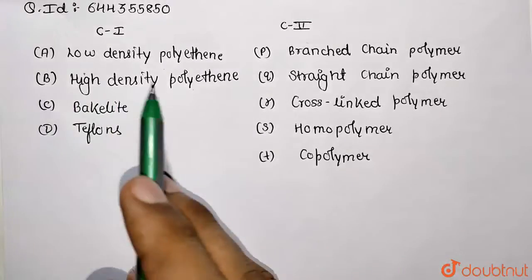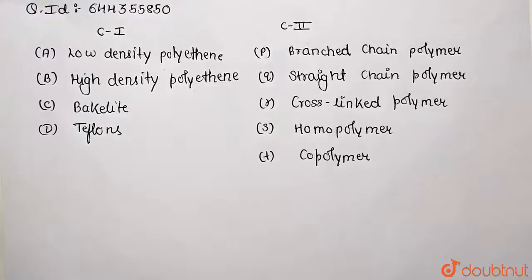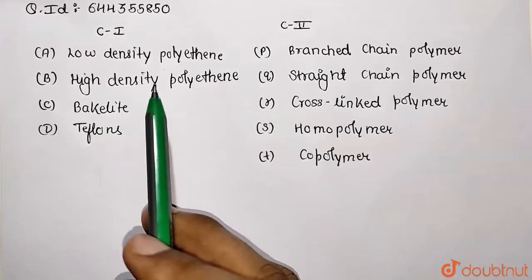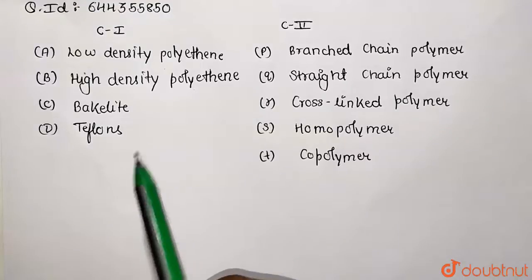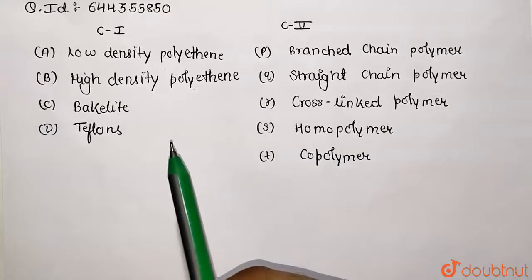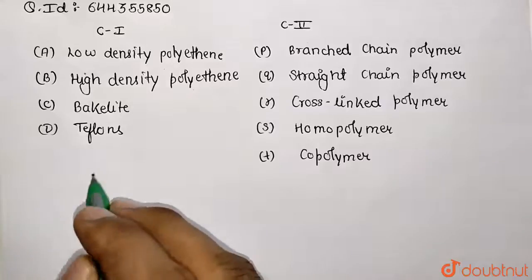Low density polythene. As we know, it's going to be a branched structure because low density polythene is manufactured at particular temperature and conditions. Overall, their structure is highly branched, and that's why they are chemically inert and tough. So option A is going to match with branched chain polymer.